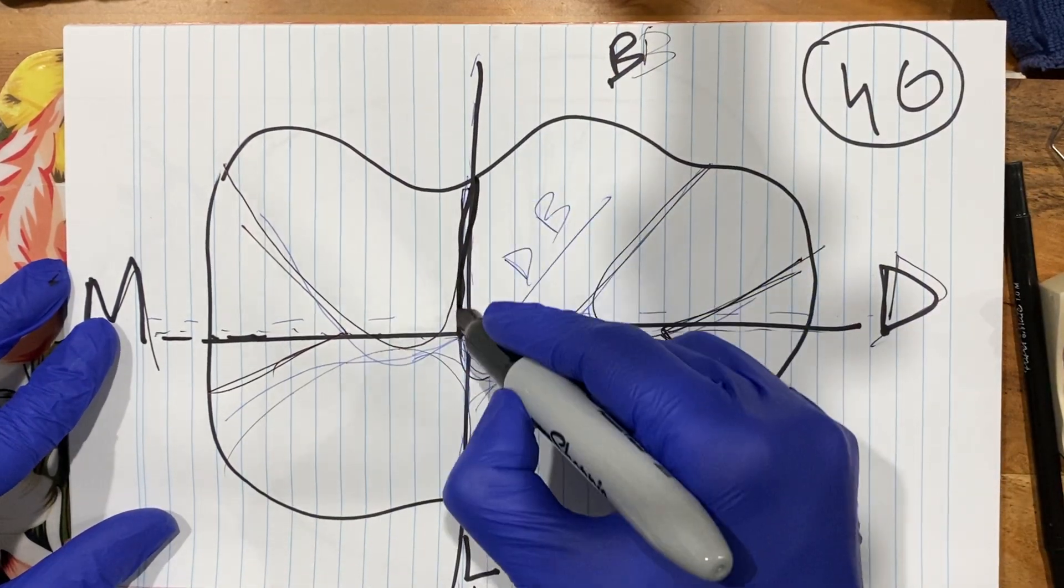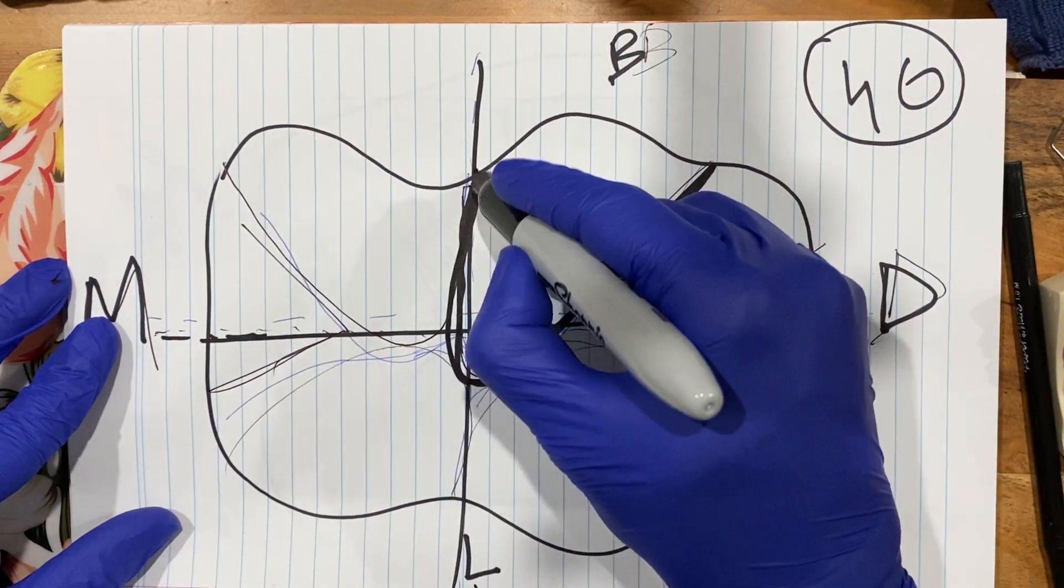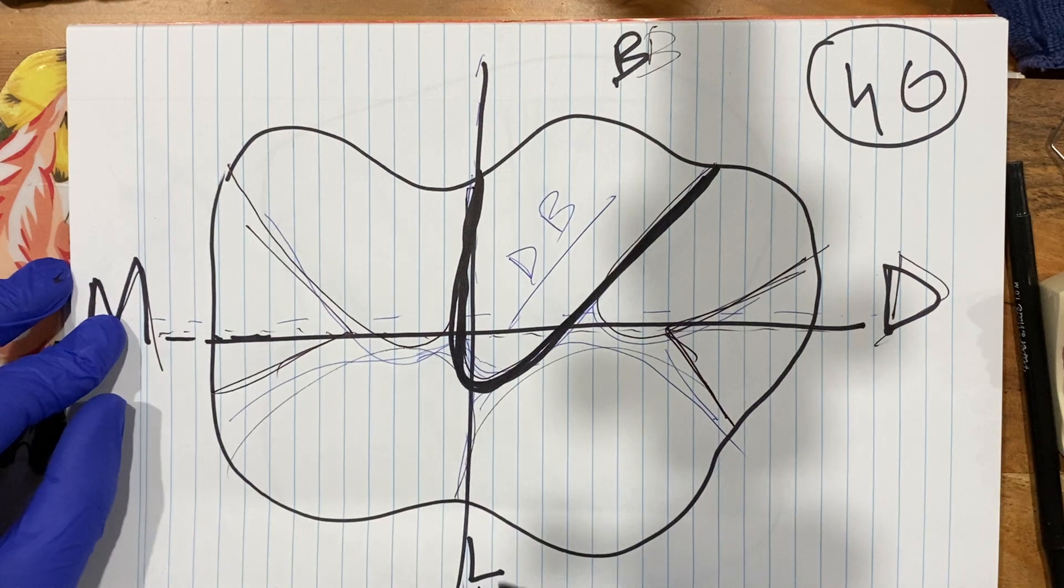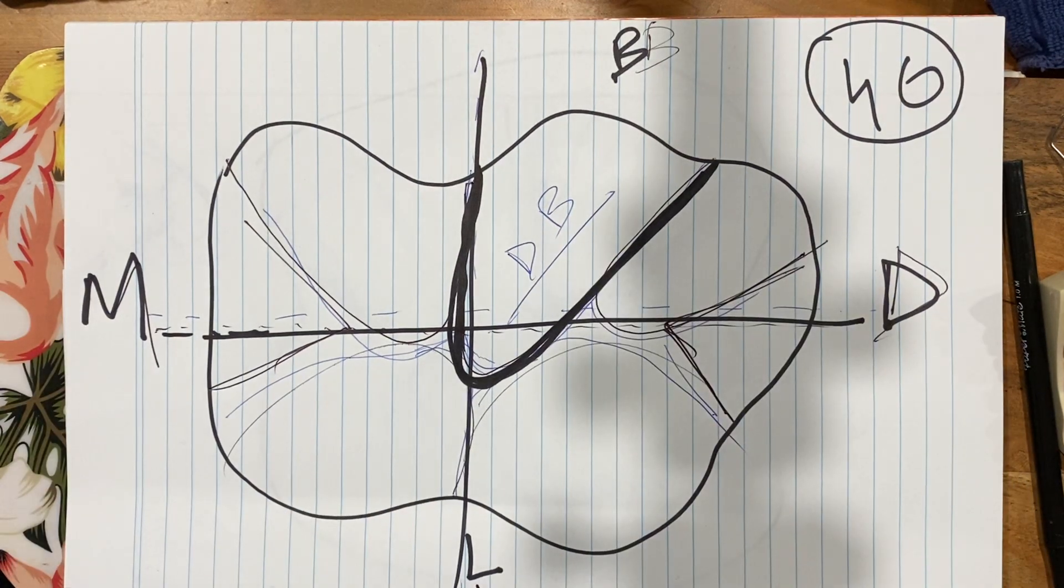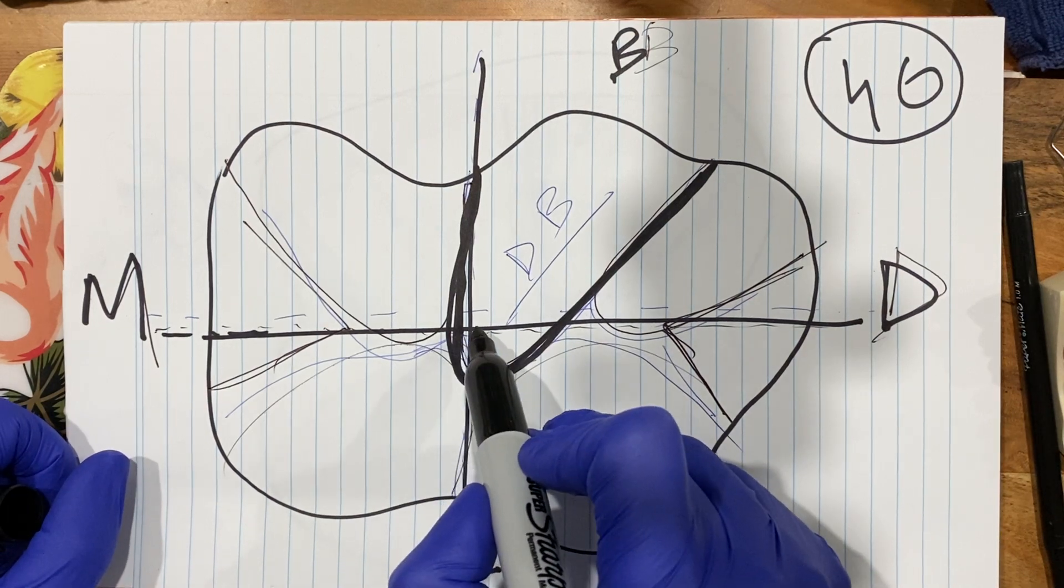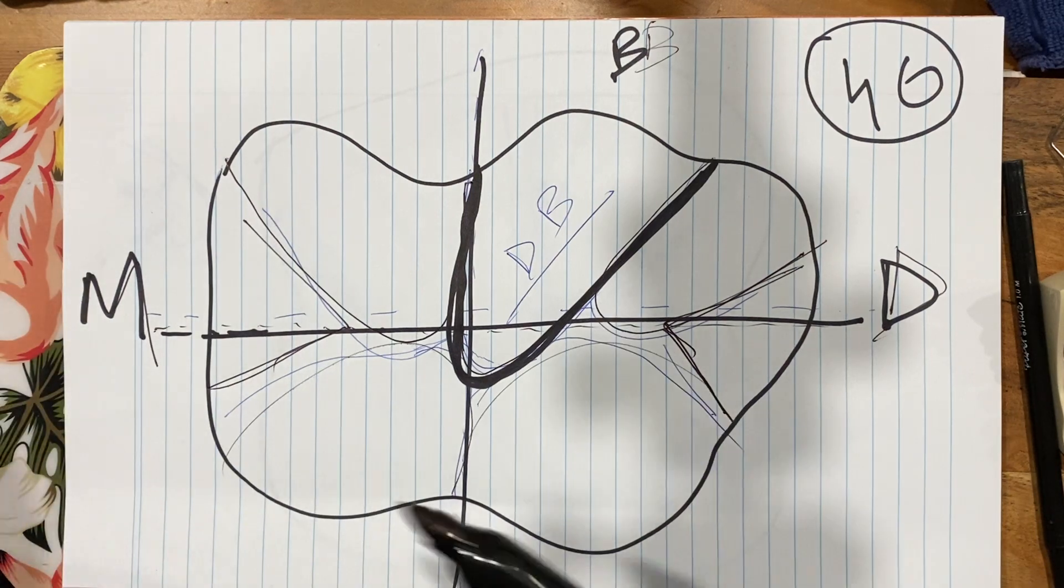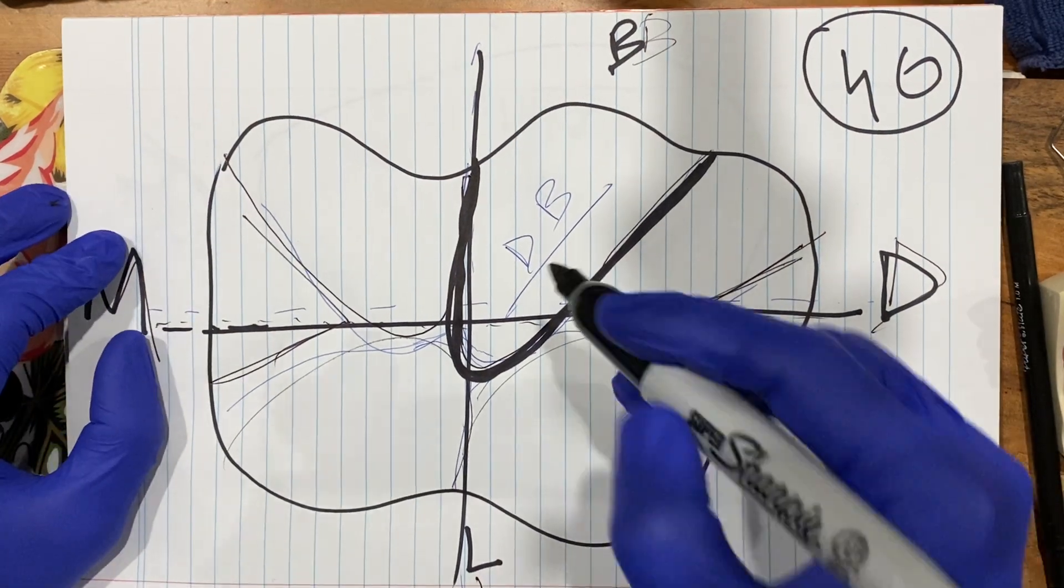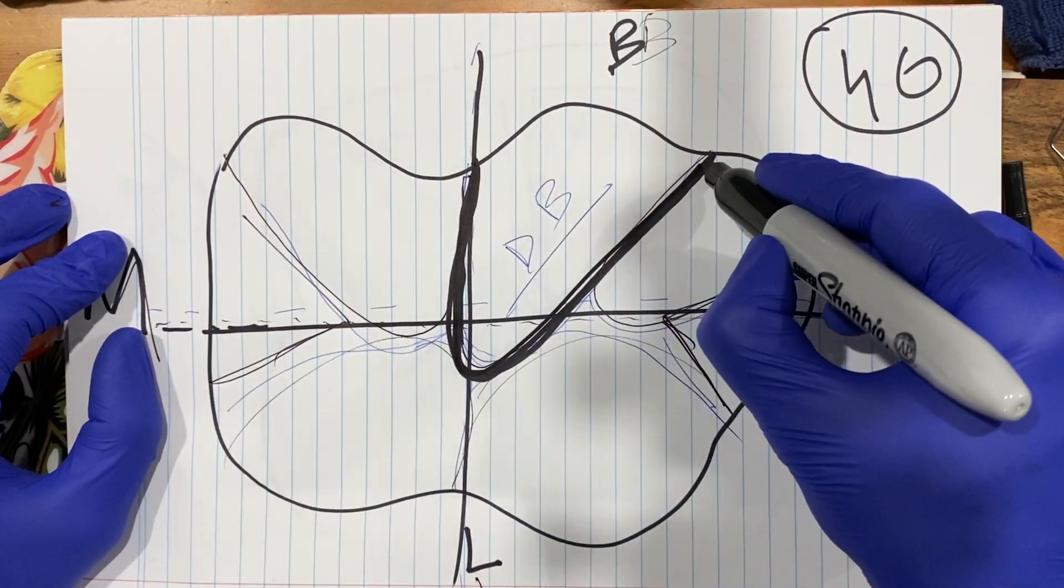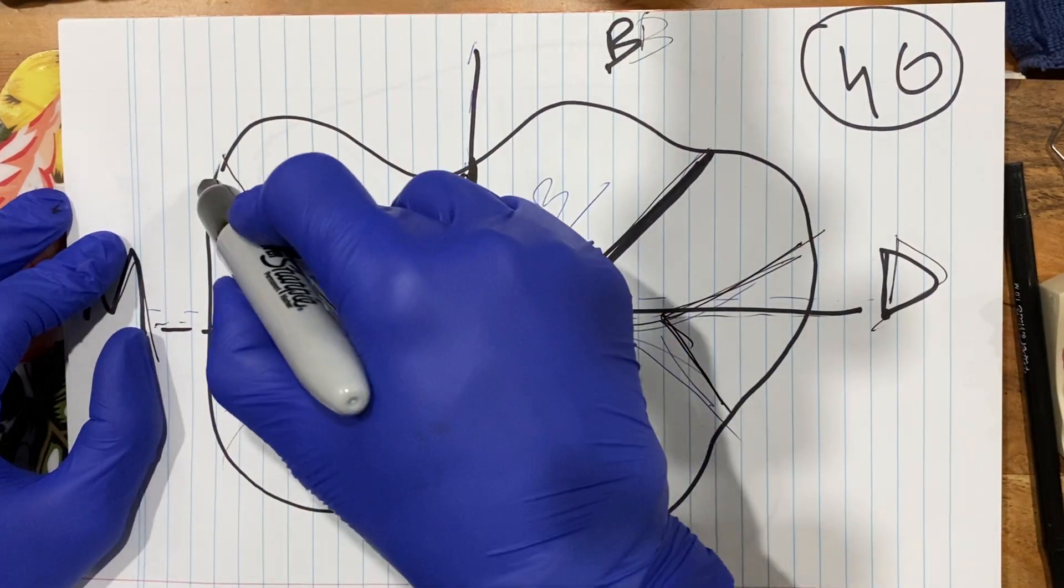You would see that the distal buccal cusp will go from center, crosses the central line here, crosses the central line here. So it goes from here all the way and it forms like an A. Now this is your main guiding. If you don't have this right and you keep it, don't cross the central groove and keep it there, that's the time your whole anatomy goes wrong.